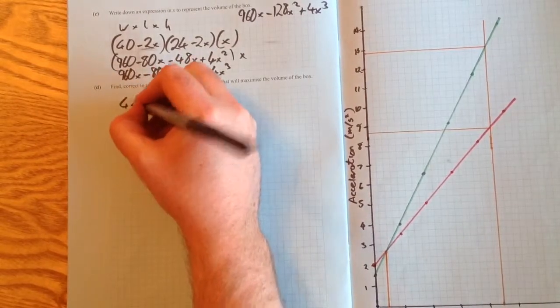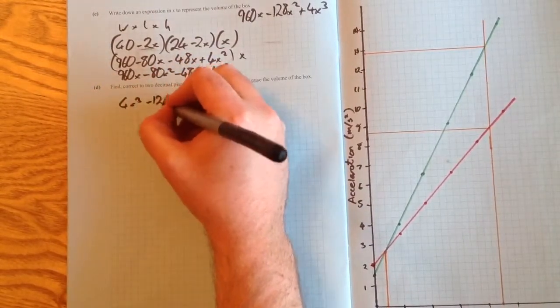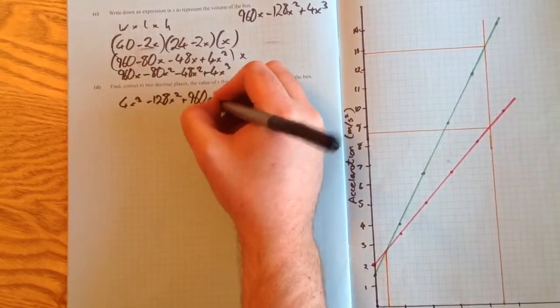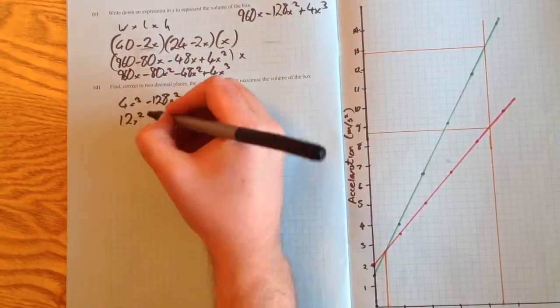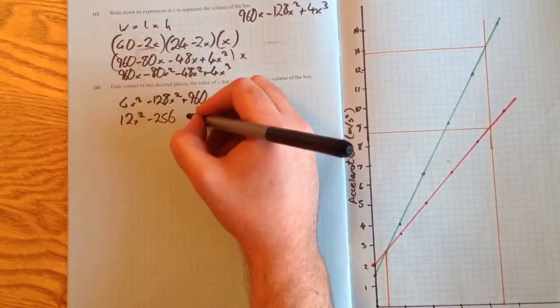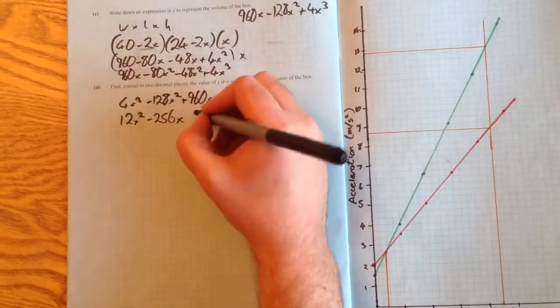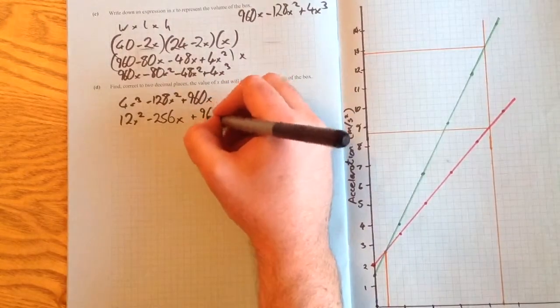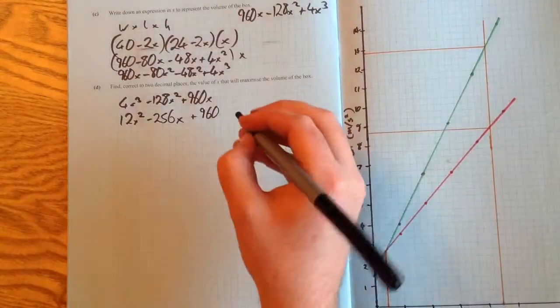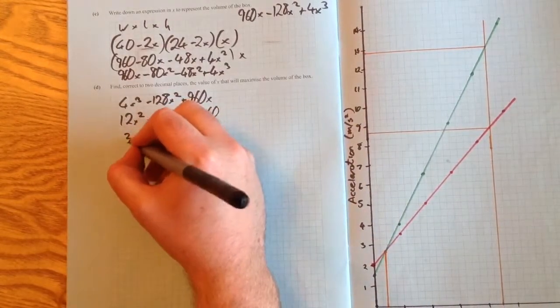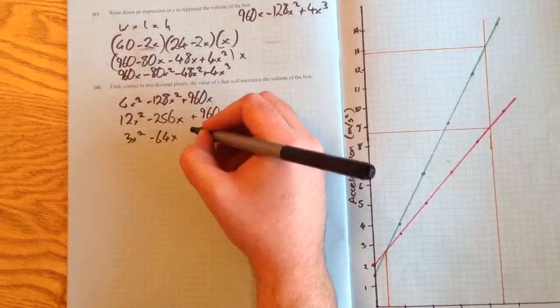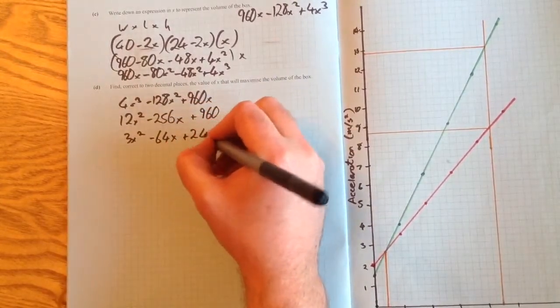I'm going to differentiate the formula I had: 4x cubed minus 128x squared plus 960x. Differentiating gives 12x squared minus 256x plus 960. To make life easier, divide across by 4, and you get 3x squared minus 64x plus 240.